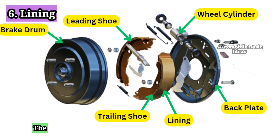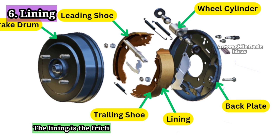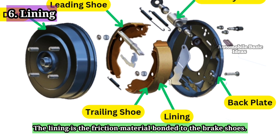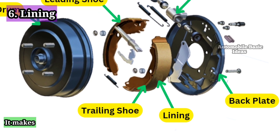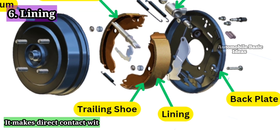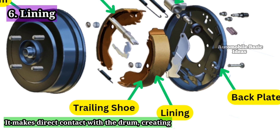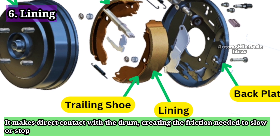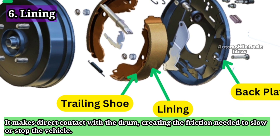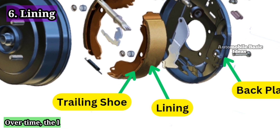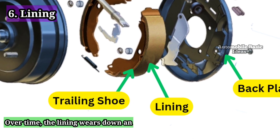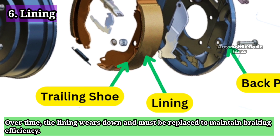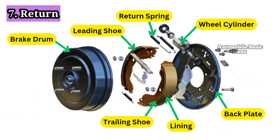6. Lining. The lining is the friction material bonded to the brake shoes. It makes direct contact with the drum, creating the friction needed to slow or stop the vehicle. Over time, the lining wears down and must be replaced to maintain braking efficiency.